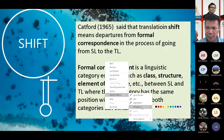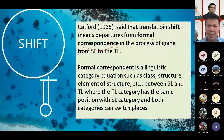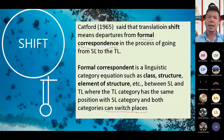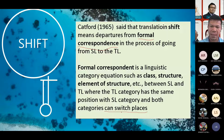Formal correspondence is a linguistic category equation such as class, structure, element of structure, etc., between source language text and target language text, where the TL category has the same position with the SL category and both categories can switch places. This shift is related to the structure of the SL into the TL, and the structure can be switched from the source into the TL without distorting the meaning.